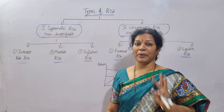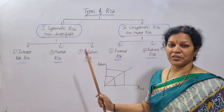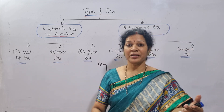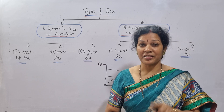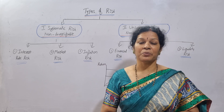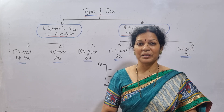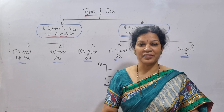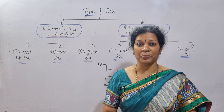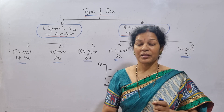Systematic risk is divided into three parts: interest rate risk, market risk, and inflation risk. First, interest rate risk — based on the interest rate, the risk will be increasing or decreasing. For example, equity shares have variable interest; it won't be consistent and will change according to the conditions and the profits and position of the organization.